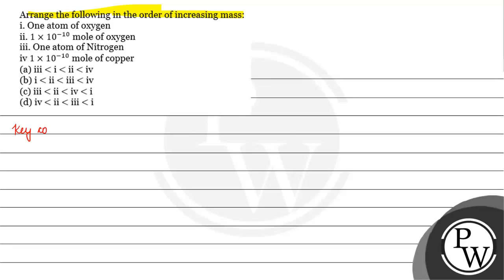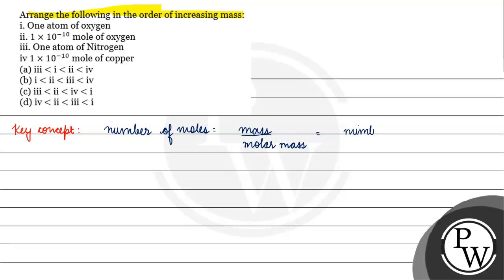The key concept for this question is: we have number of moles, which equals mass divided by molar mass. It is also equal to the number of elementary entities divided by Avogadro's number.